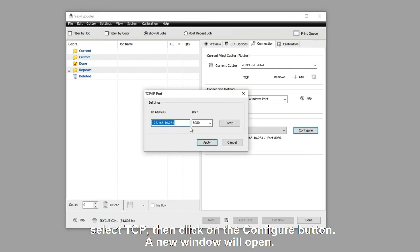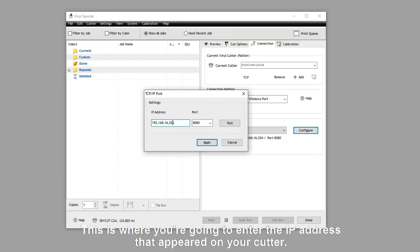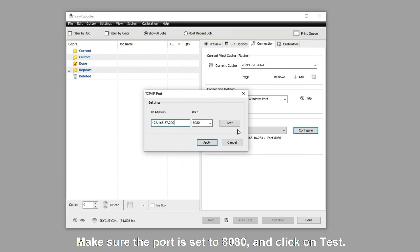A new window will open. This is where you're going to enter the IP address that appeared on your cutter. Make sure the port is set to 8080 and click on Test.